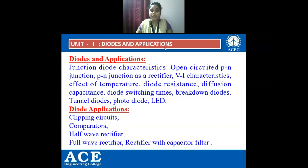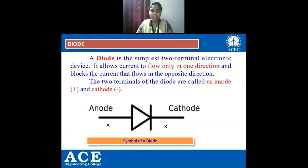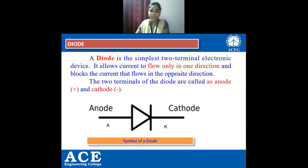Now let us first see what is a PN junction diode and what is a diode. Here we can see the symbol of a diode showing anode and cathode. By this we can understand that a diode is a two-terminal device which has anode and cathode. Anode is indicated by A and cathode is indicated by K. Anode is for positive and cathode is for negative.